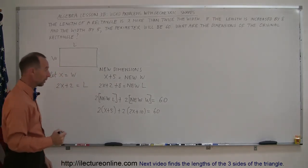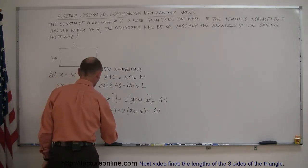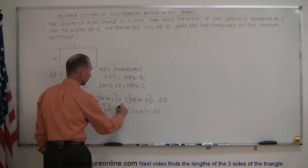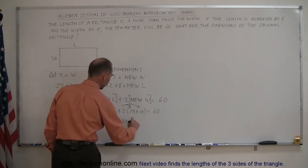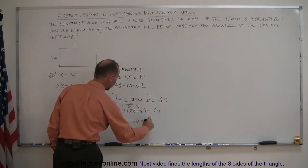First thing we do is get rid of the parentheses. So that gives us 2 times x plus 10, by multiplying the 2. And then we do the same over here. So this becomes plus 4x plus 20, and that adds up to 60.